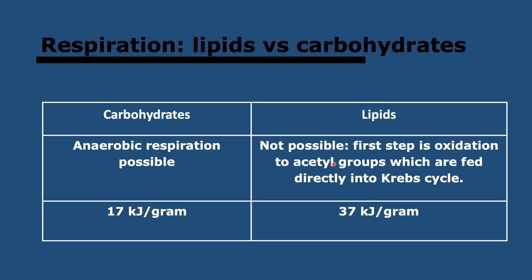Finally, we'll look at the difference between using carbohydrates and lipids in respiration. You can use both, but lipids have a much higher yield of energy due to having less oxygen and more hydrogen and carbon — which have a higher yield in respiration. Also importantly, you can't do anaerobic respiration with lipids, because lipids are first oxidized to acetyl-CoA, which feeds directly into the Krebs cycle — you can't make pyruvate, which you would need for anaerobic respiration.